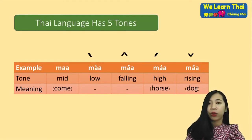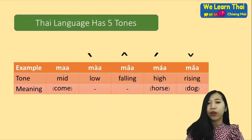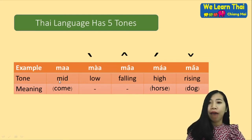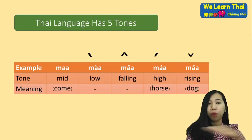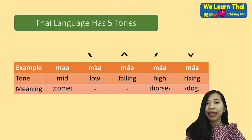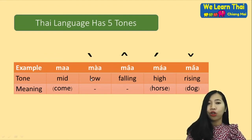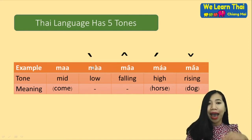And then, Thai tones. We have five tones, but we have just four tone marks. The first one: mid-tone — mid-tone has no tone mark. For example, 'maa' — the sound is steady and monotone, like 'maa'. This means 'come'. Second one: low tone — we have a tone mark like this. For example, 'maa' — the sound goes down.